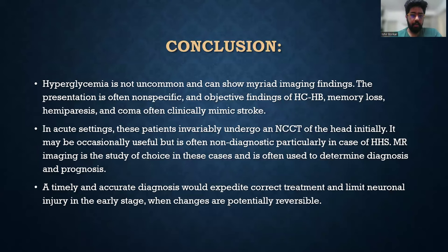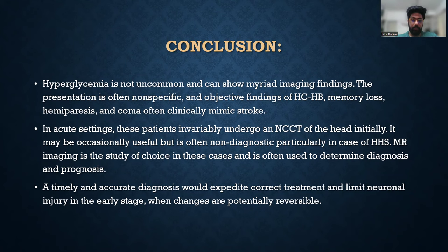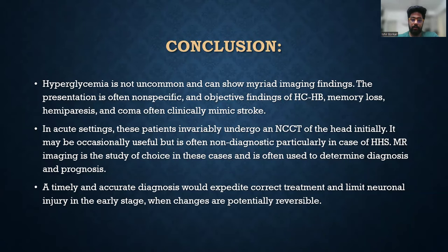To conclude, hyperglycemia is not uncommon and can show a myriad of imaging findings. The presentation is often nonspecific, with objective findings of hemichorea hemiballismus, memory loss, hemiparesis, and often coma clinically mimicking stroke. In acute settings, these patients invariably undergo NCCT of the head initially — it may be occasionally useful but is often non-diagnostic, particularly in cases of HHS. MR imaging is the study of choice in these cases and is often used to determine diagnosis and prognosis. A timely and accurate diagnosis would expedite correct treatment and limit neuronal injury in the early stage when changes are potentially reversible.